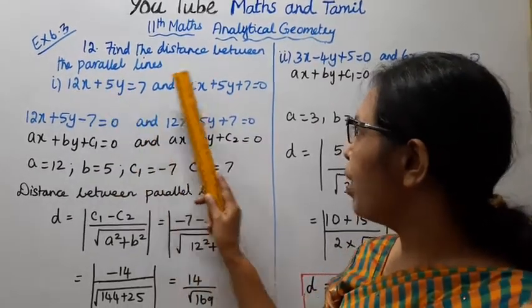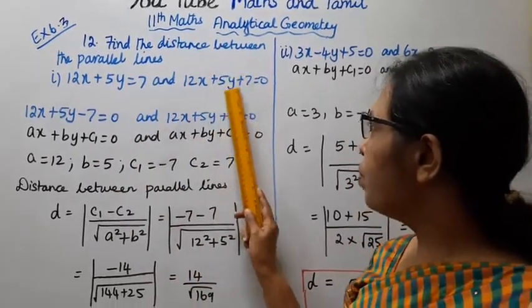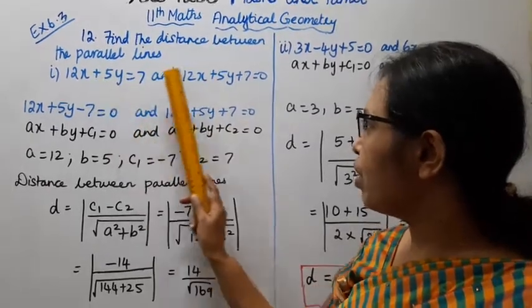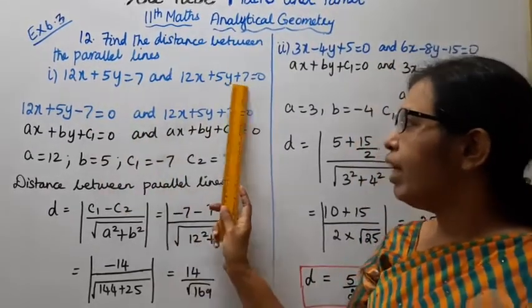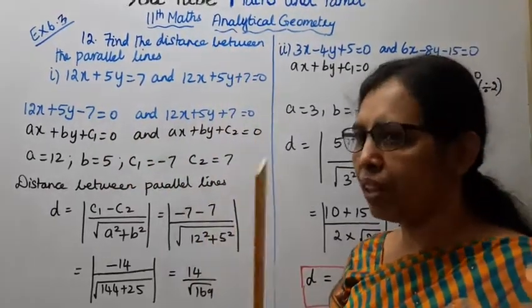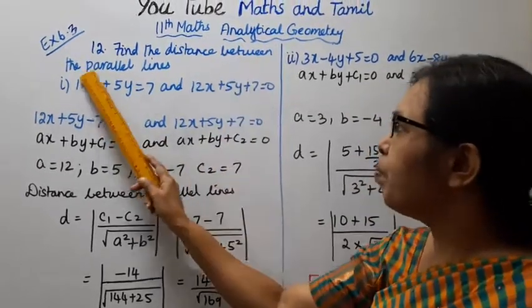Ax plus by - the x coefficient and y coefficient of the two lines are the same, so these are parallel lines.